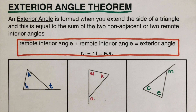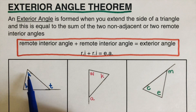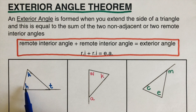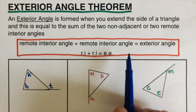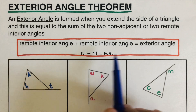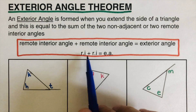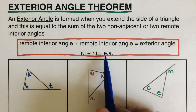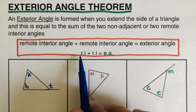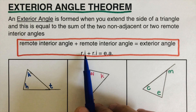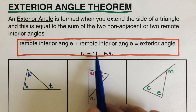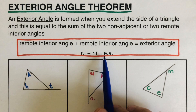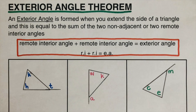This theorem tells us that the sum of the two remote interior angles — so if I add angle H and angle K — that is equal to the exterior angle. The measure of one remote interior angle plus the measure of the other remote interior angle equals the measure of the exterior angle.